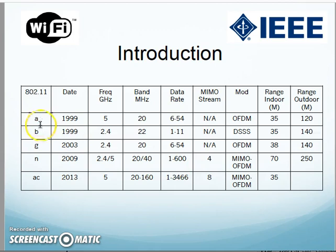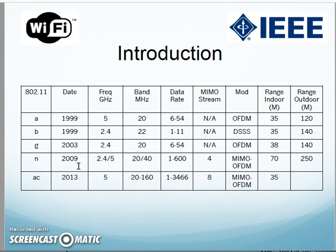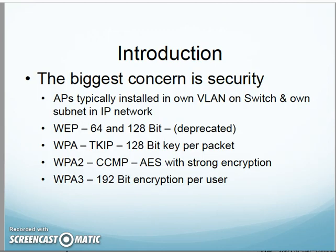I put together a summary of where we are now with the A, B, G, N, and AC standards — those are the common ones people are using. Looking back, in the late 90s the A and B standards came out, then in the early 2000s G evolved, and AC followed. A lot of us are probably using N at home, maybe even AC. I pulled stats on frequency bands, data rates, whether MIMO is used — only N and AC use MIMO — and approximate indoor and outdoor ranges. Use that chart as a reference.